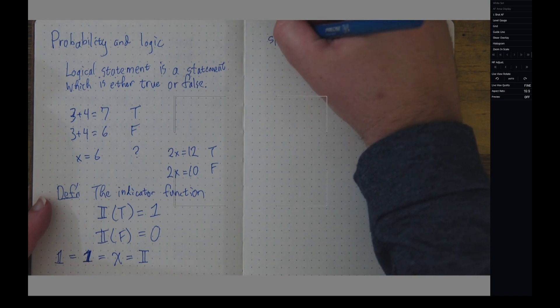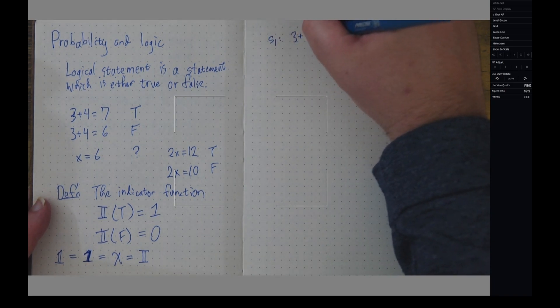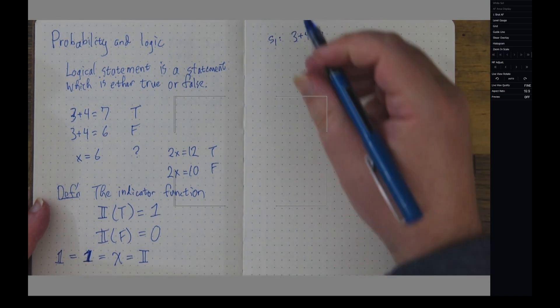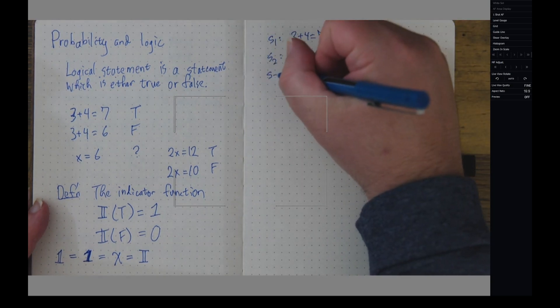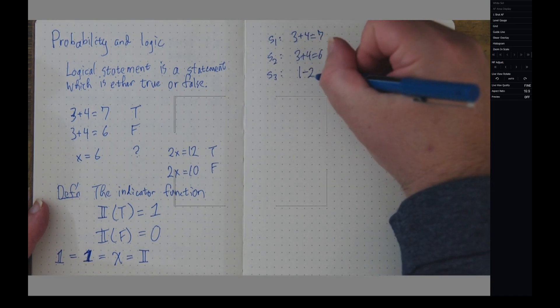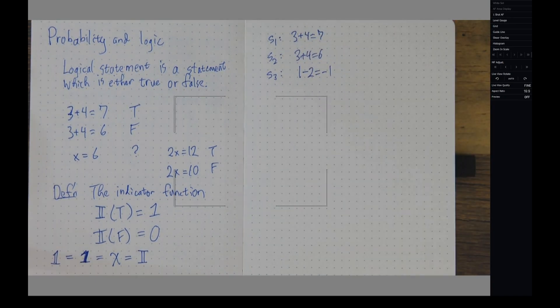So, for instance, suppose that S1 was 3 plus 4 equals 7. Suppose that S2 was 3 plus 4 equals 6. And S3 was 1 minus 2 equals negative 1. Now, those three statements - out of those three statements, only two of them are true.